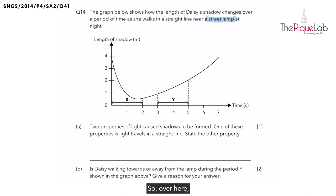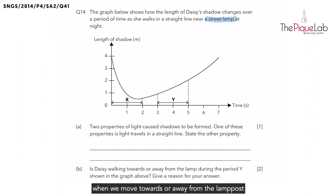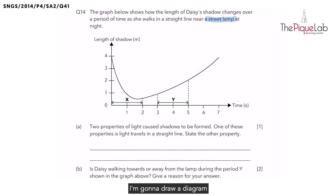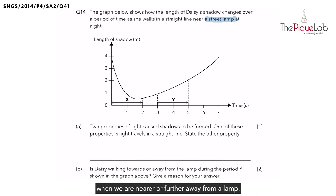How does our shadow actually change when we move towards or away from the lamp post or the street lamp? I'm going to draw a diagram to show how the length of the shadow actually changes when we are nearer or further away from a lamp.